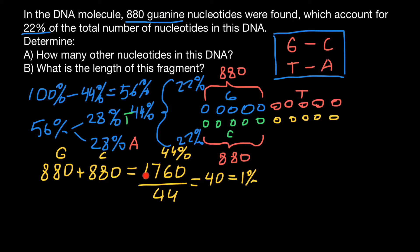If we know that this is 22% here and 22% here, we add these two bases and we are getting 44%, and divide by 44 in order to find 1%. So 40 bases is 1%. If we know that thymine and adenine makes 56%, what we are doing next step, we just multiply 56 by 40, and 40 here stands for 1%.